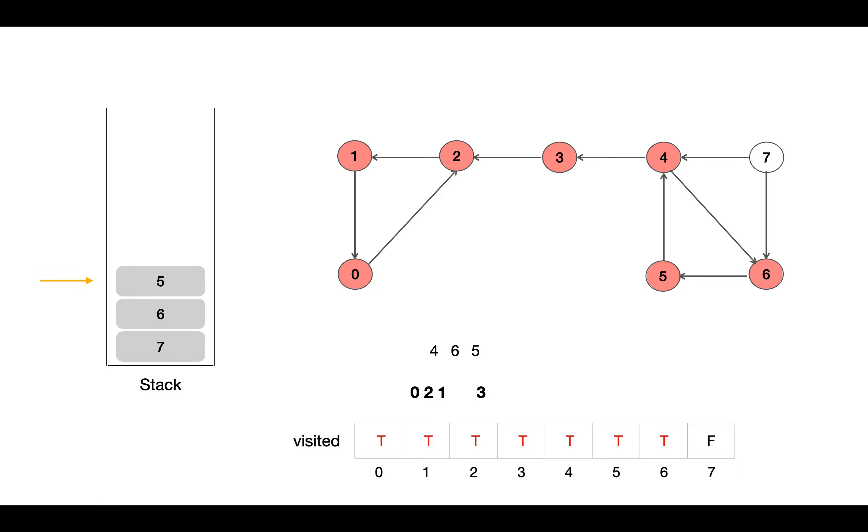So we continue the process and keep popping the nodes until we get to 7 which is unvisited. At last we visit 7, and since there is no outgoing vertex from 7, so we get another SCC component, that is 7. And now we can see the stack is empty and we got all the strongly connected components present in the graph.